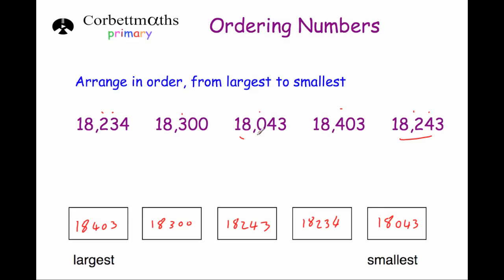So when you're asked to order numbers, just compare them. Look at the size — check if any numbers have digits in the thousands, then the hundreds, then the tens and units. Just compare the sizes, and make sure you're aware of whether you're going from smallest to largest or largest to smallest.